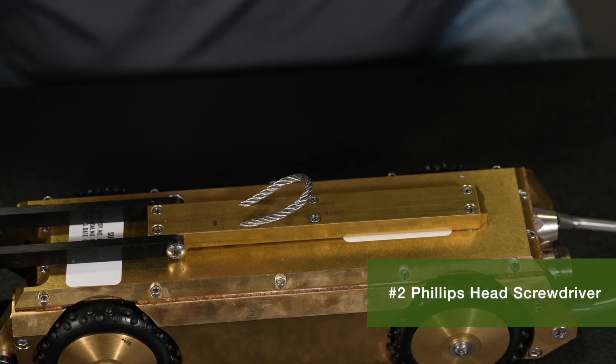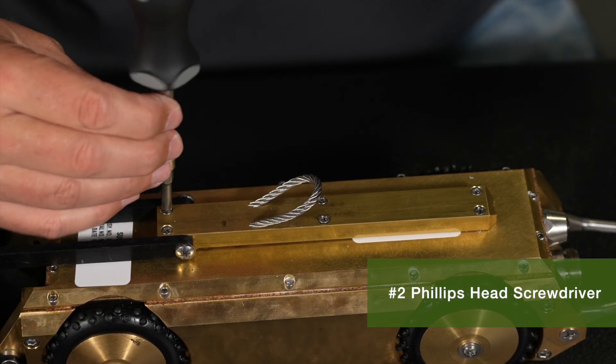Remove the six screws that attach the cable cover plate to the tractor body and set aside.